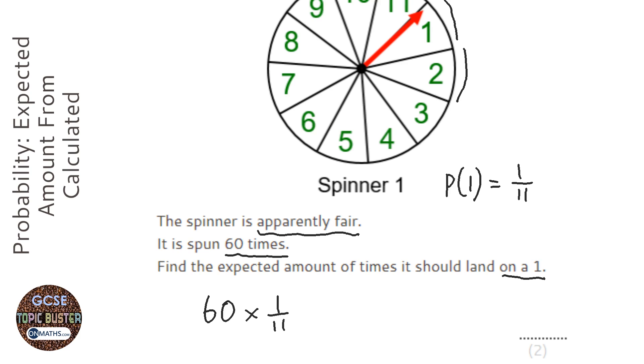So I can do that on my calculator. I'll do 60 times 1 over 11. Or what you could do is 60 divided by 11, it gives you the same answer. And it gives me the answer of 5.45 recurring.